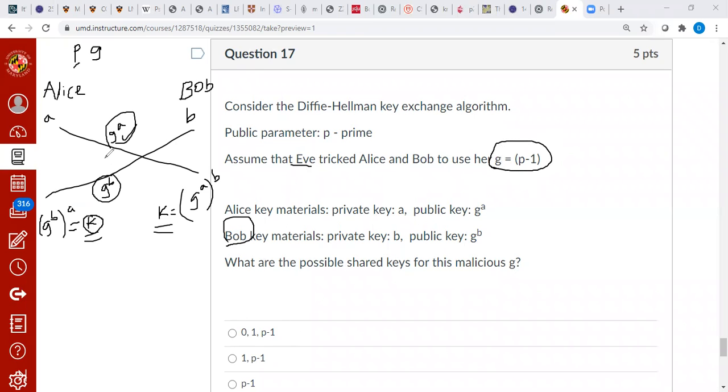G itself is malicious because who is giving G? G is generated by Eve, so G is equal to P minus one. So how do we handle that? We can think about it. We can just go here and replace G by P minus one and then answer it easily. What is the value of P minus one power A, for example? In mod P. So in mod P, P is zero, right? Because P mod P is zero.